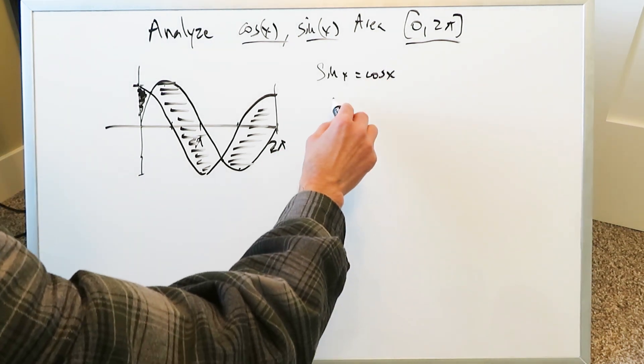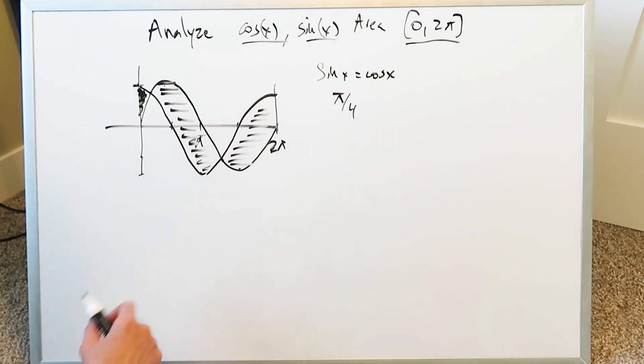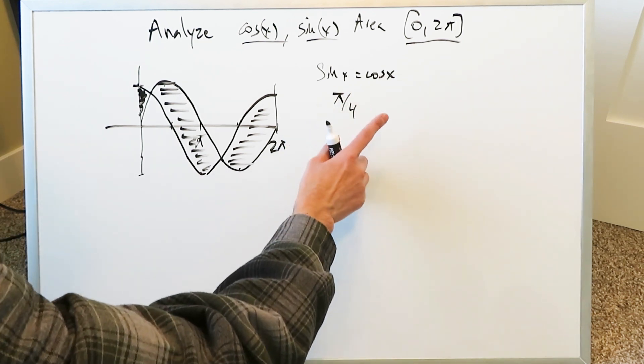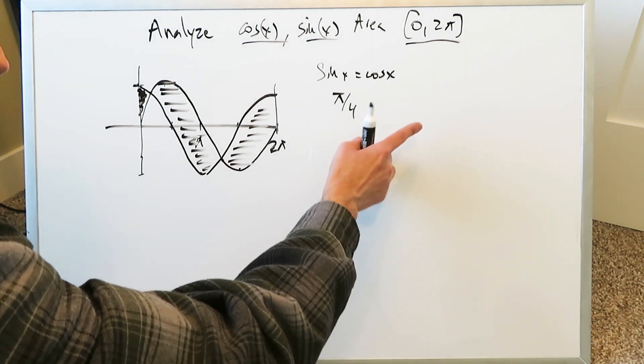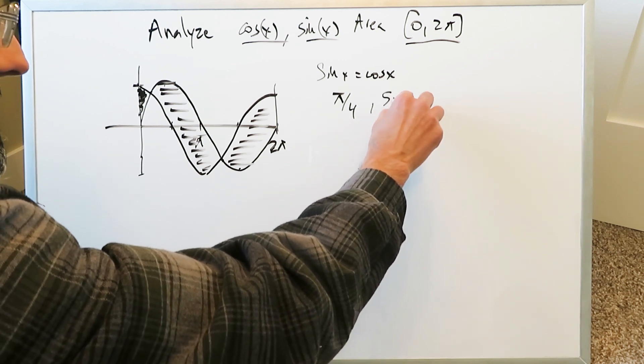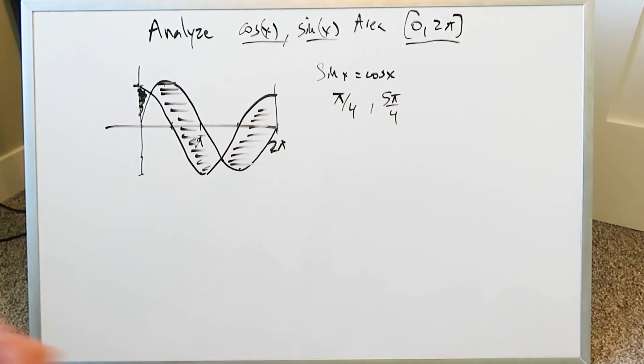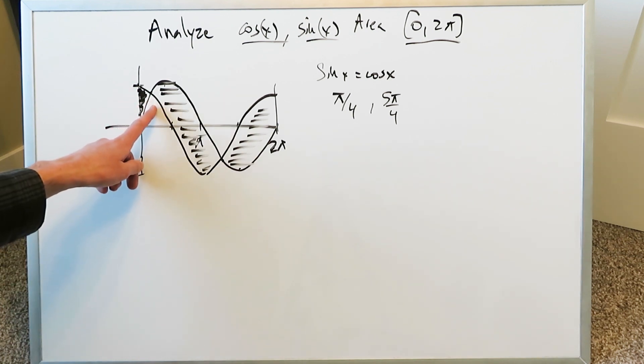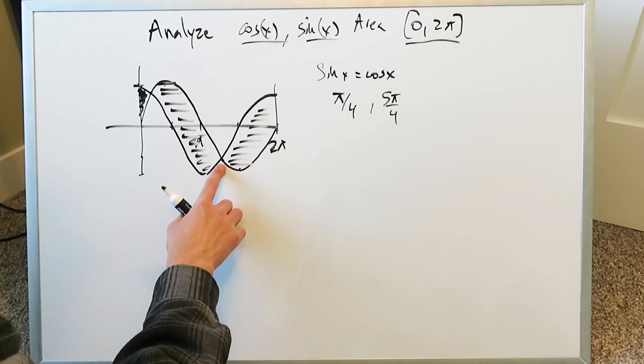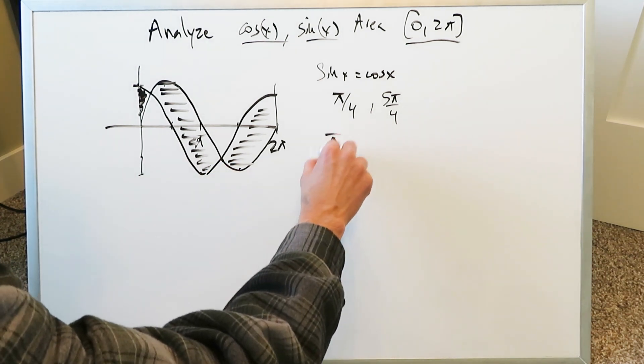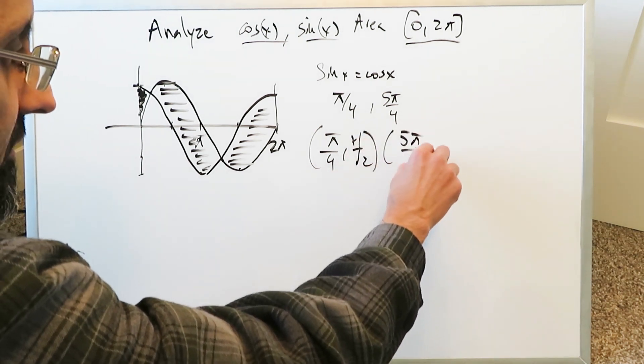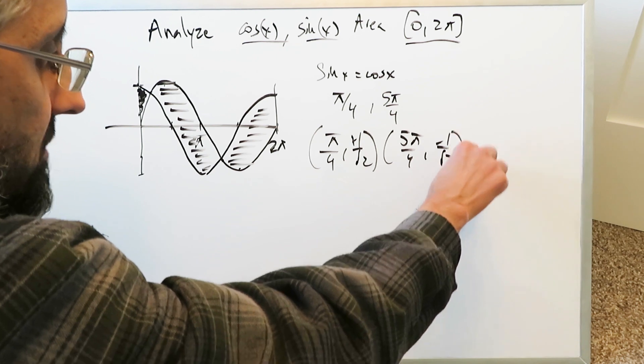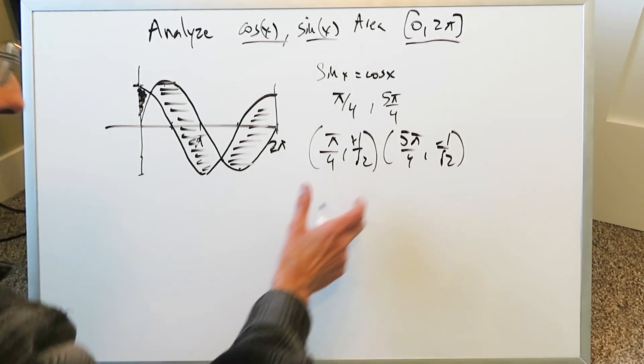But you know sine and cosine have the same values at π/4. Sin(45°) = cos(45°), and they have the same sign in the first and third quadrants. The 45° angle in the third quadrant is 225°, which is 5π/4. These are your intersection points: π/4 comma 1/√2 and 5π/4 comma -1/√2. You just need to know these x points.